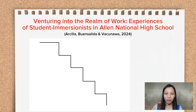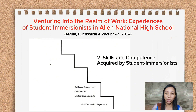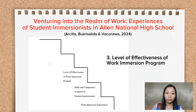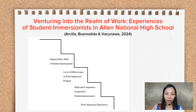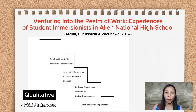As you can observe in the figure, it shows a ladder which depicts the hierarchical process followed in the study. In the first level, the researchers wrote work immersion experiences. In the second level, the researchers indicated the skills and competencies acquired by the student immersionists. Moving forward to the third level, it reflects the level of effectiveness of the work immersion program, and on to the fourth level, the employability skills of the student immersionists. In the first two levels, the data require qualitative approaches, so the proponents employed a series of focus group discussions and in-depth or semi-structured interviews to gather the data.